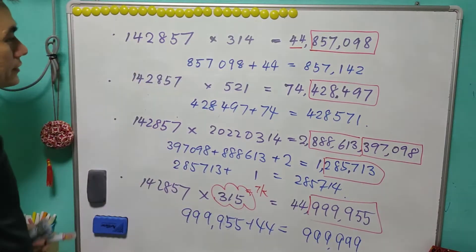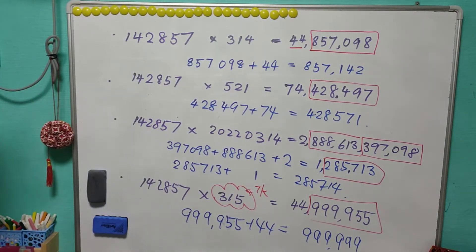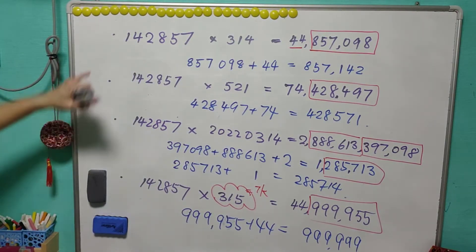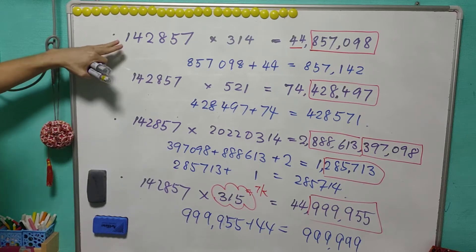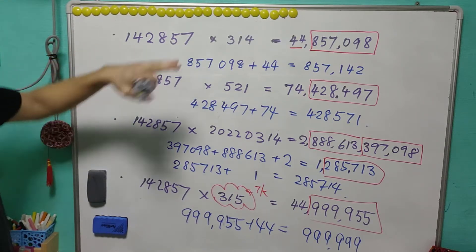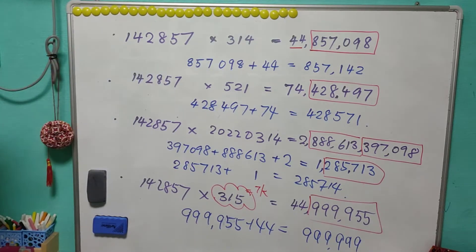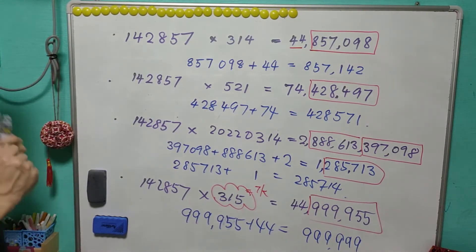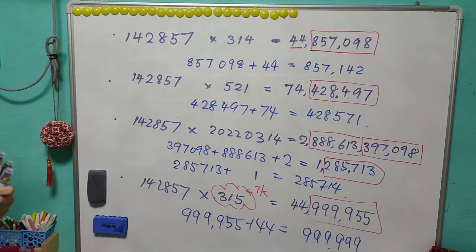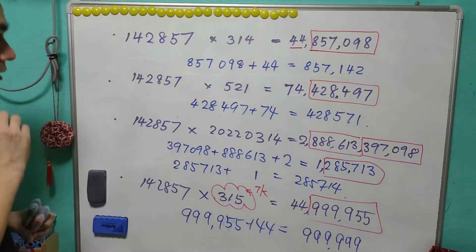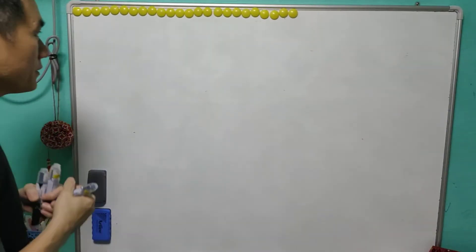This is why 142857 is so special — it is called a cyclic number. And there are more than just this one. A set of such numbers exists, so let's look at another example.